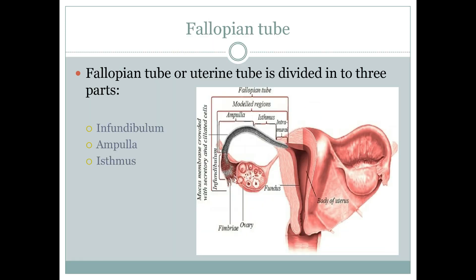Moving ahead to the fallopian tube or uterine tube, it has three parts. Starting from the finger-like projections called fimbriated ends, the very first part is called the infundibulum. The fallopian tube then curves — this part is called the ampulla. At last, we have the isthmus.